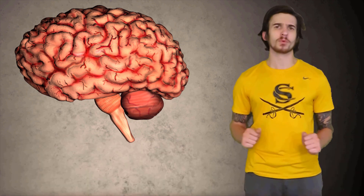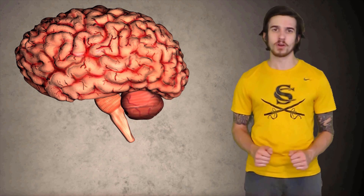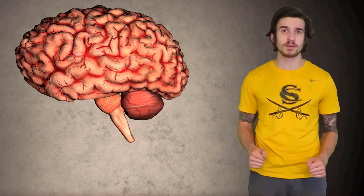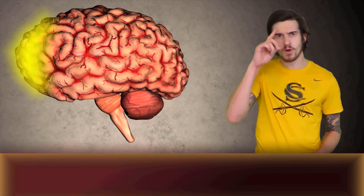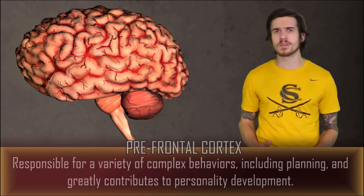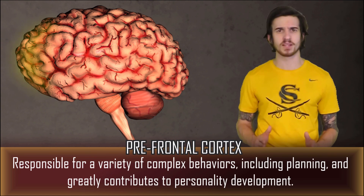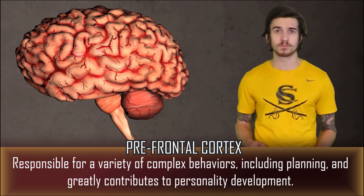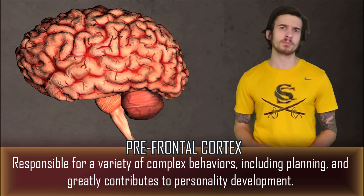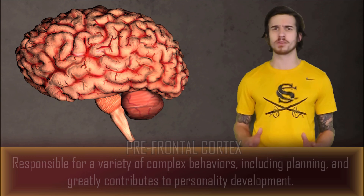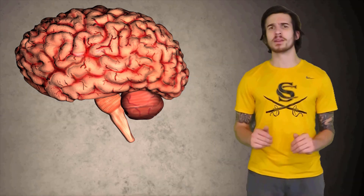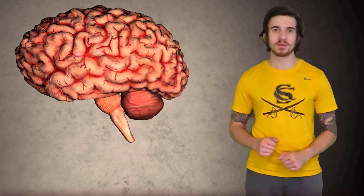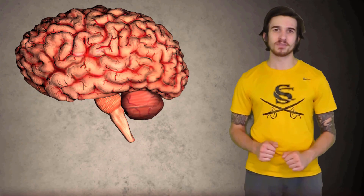Before we say goodbye to our forebrain, let's take a quick second to look at some of the cortical areas in our lobes. Cortical areas refer to specialized regions within the cerebral cortex. The prefrontal cortex is the very front part of your frontal lobe, responsible for a variety of complex behaviors — planning being the biggest one. It also greatly contributes to personality development. The prefrontal cortex does not fully develop in most individuals until they are about 25 years old, which can explain why as you age you start to mature and make better decisions. Until then, you can blame all your poor decision making on your underdeveloped PFC.